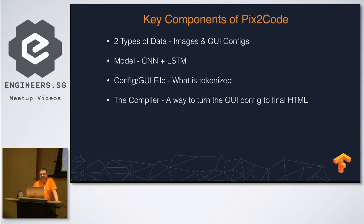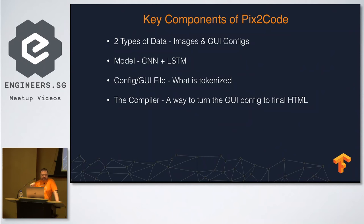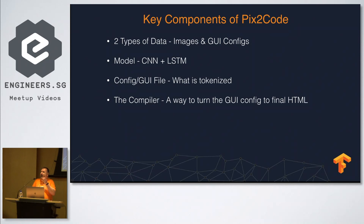There are two key inputs: images and GUI configs. The GUI config is basically a representation of an HTML page in a much simpler format. The model uses a convolutional neural network going into an LSTM to extract features. The GUI file becomes the vocabulary we're predicting, and then a compiler converts those predictions into a proper HTML file.